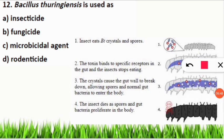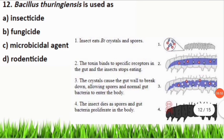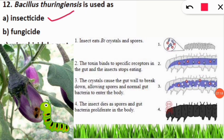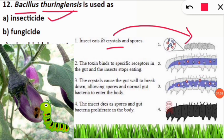Bacillus thuringiensis (Bt) is used as a biological insecticide. It has been revolutionary in crop pest management — for example, Bt brinjal and Bt cotton. The gene for Bt's crystal protein was incorporated into crop plants. When insects bite the plant, they engulf the spores and crystals, which activates the toxin.